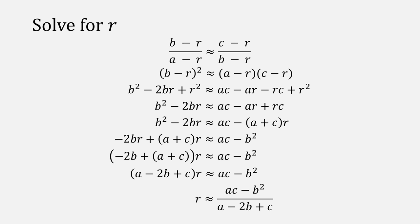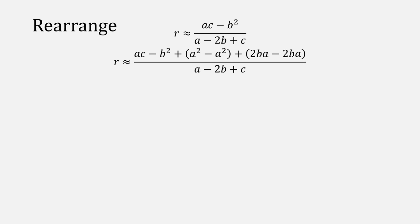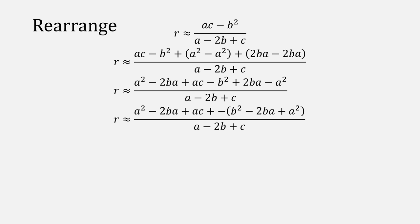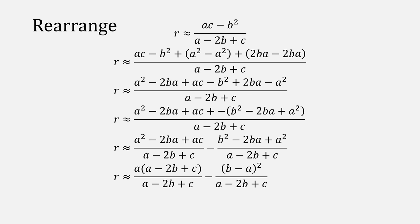Now we simply divide by that term and we have an approximation for r. But we're not quite done yet. We can rearrange this form to make future math easier. First, we complete the square in the numerator and then move the terms around. Afterwards, we'll do a double negation of part of this so that we can turn this into a subtraction of fractions. For the term on the left, we can factor out an a, and for the term on the right, we can simplify that to be b minus a squared.